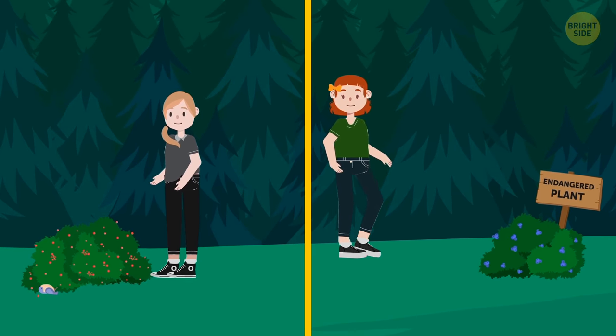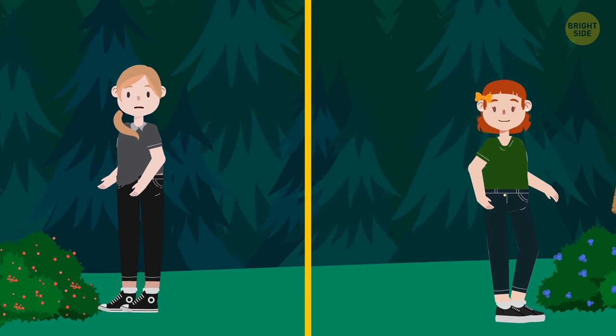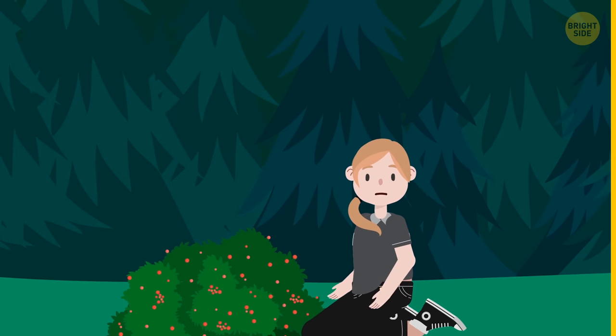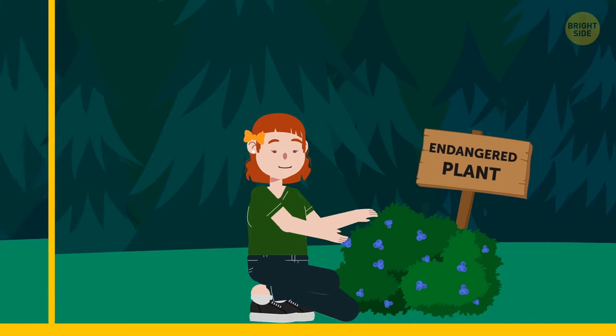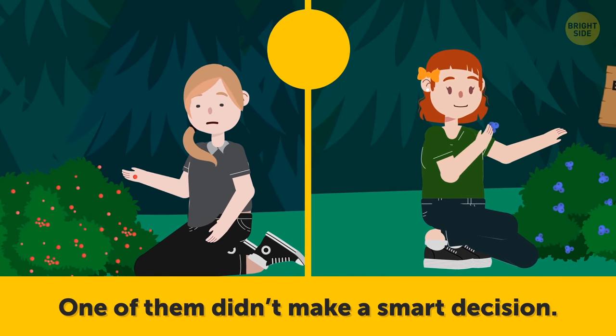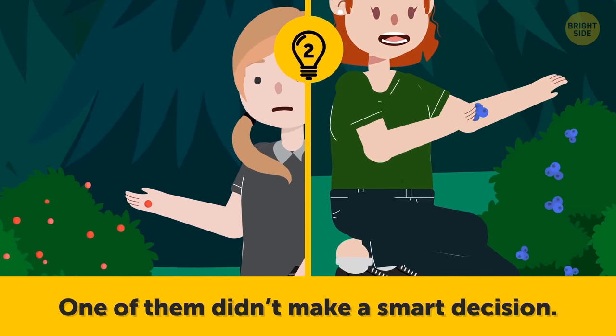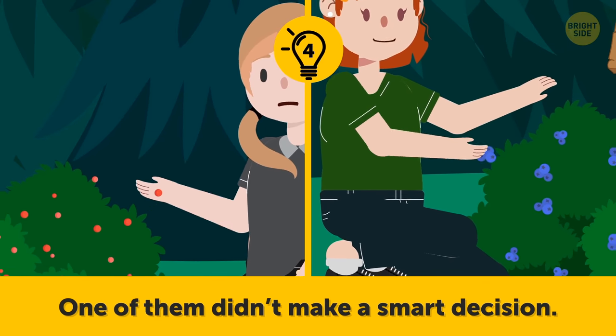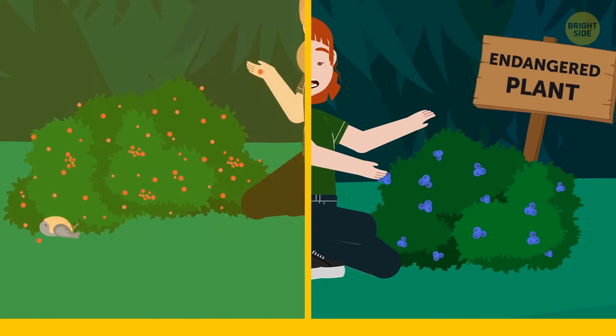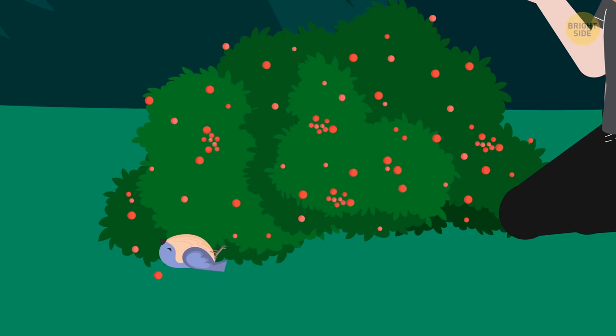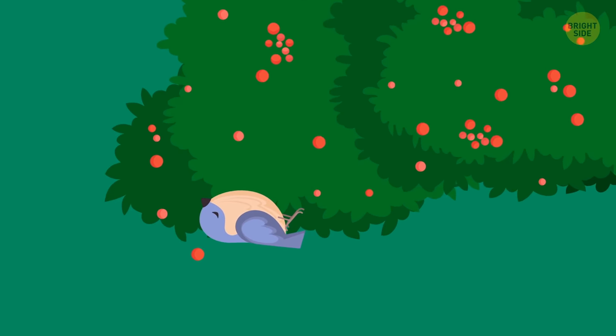Ashley and Mary were walking in the forest when they spotted some berries. Each picked a different plant to feed on, but one of them didn't make a smart decision. Guess who? It's Ashley. There's an unconscious bird next to the plant, which indicates it's poisonous.